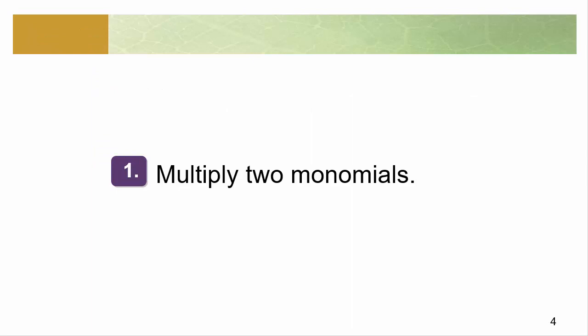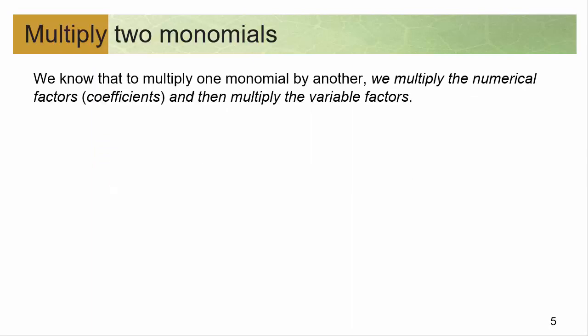Let's start with monomials, the most simple of things. When we multiply one monomial by another, we're basically just multiplying the coefficients — the numerical pieces, the numbers — and then we multiply the variable factors as well.